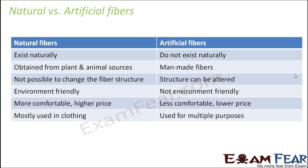Let's have a quick comparison between natural and artificial fibers. Natural fibers exist naturally, but artificial fibers do not — they are man-made. Natural fibers are obtained from plant and animal sources; for example, cotton is obtained from the seeds of the cotton plant, silk is obtained from the silkworm, and wool is obtained from animals like sheep. Artificial fibers are man-made, using raw materials such as coal, petroleum, water, and air.